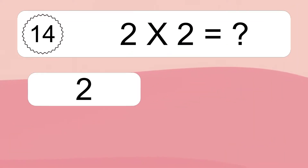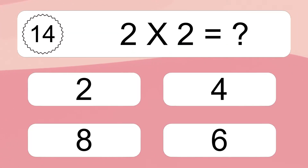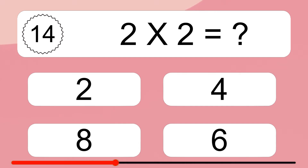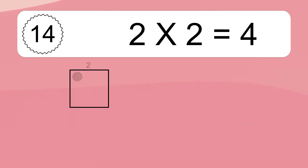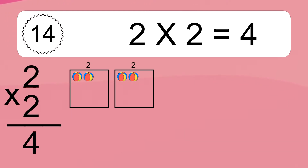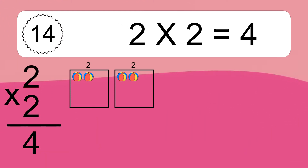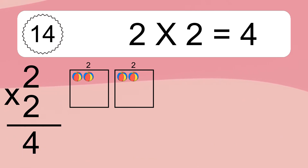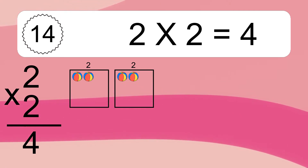2 times 2 equals what? 2 times 2 equals 4. We have 2 boxes, and each box has 2 colorful balls inside. If you count all the balls in all the boxes together, you will have 2 times 2 balls. This equals 4 balls.